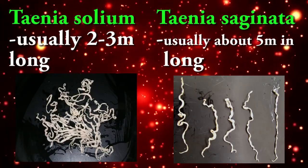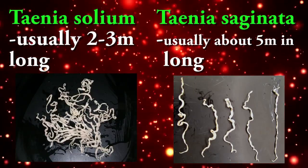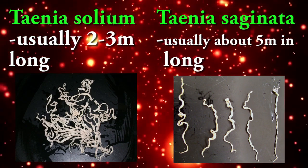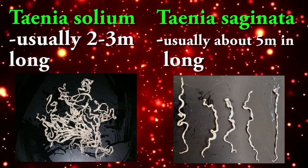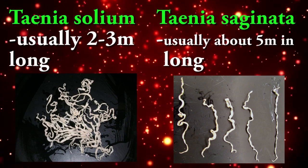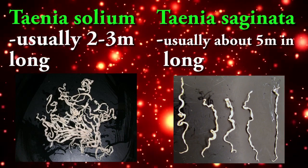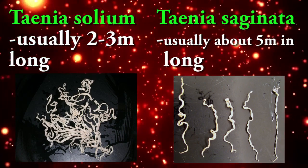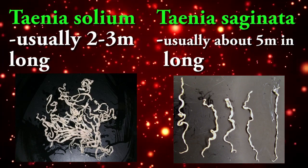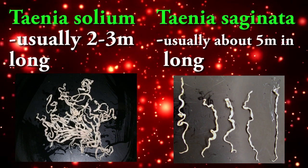Size: Taenia solium, the adult form, is usually about 2 to 3 meters long. Taenia saginata is usually about 5 meters in length, but may on occasion be much longer — about 25 meters or more.